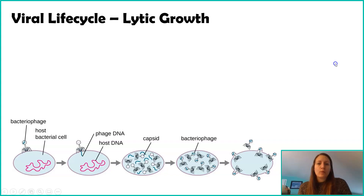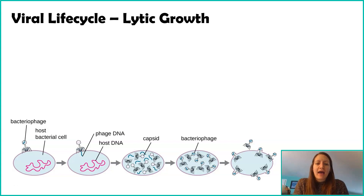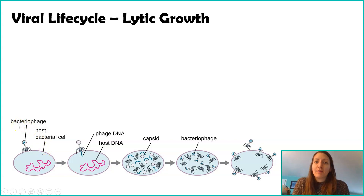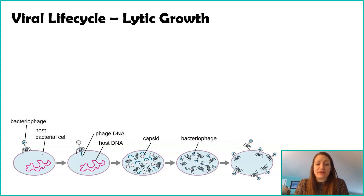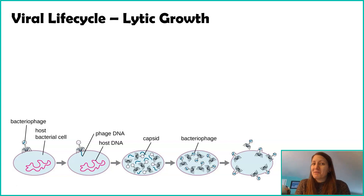There are two major ways that viruses reproduce. The first one we'll talk about is lytic growth, and this type of life cycle has a couple of direct steps. The image on this slide shows a bacteriophage — a virus that specifically attacks bacteria — and a bacterial cell. Although we're looking at a bacteriophage and a bacterial cell, this is pretty much the same exact way viruses attack all organisms in the lytic growth phase.